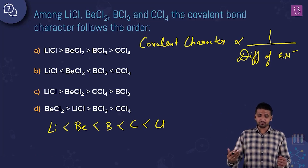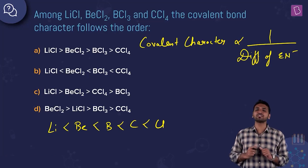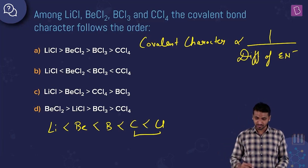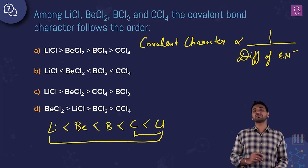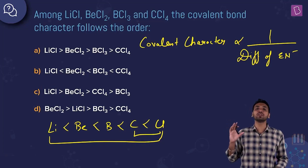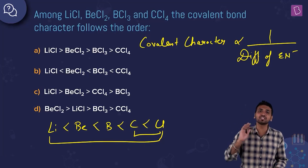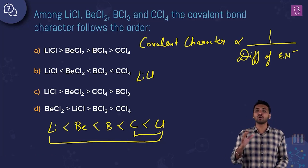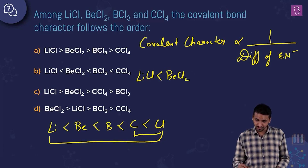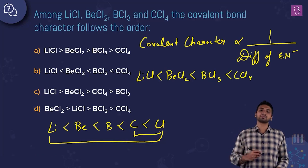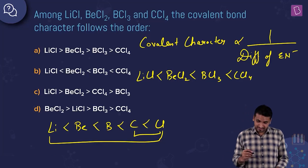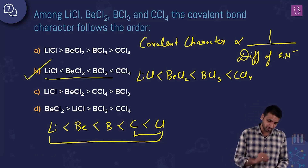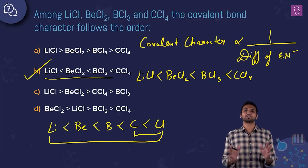Chlorine, being a group 17 element, has the highest electronegativity here. Carbon and chlorine are closest in electronegativity, so CCl₄ has the most covalent bond character. Lithium and chlorine have the largest electronegativity difference, so LiCl is most ionic with least covalent character. The correct order is LiCl < BeCl₂ < BCl₃ < CCl₄, matching option B, which is the right answer.